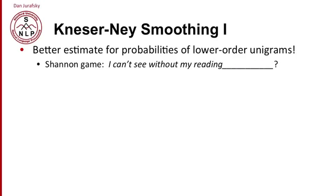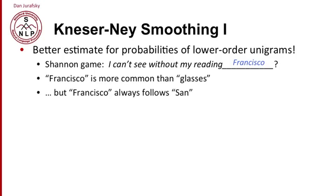Well, how about instead, the word Francisco? Well, that seems very unlikely in this situation. And yet, Francisco, as just a unigram, is more common than glasses. But the reason why Francisco seems like a bad thing after reading, one intuition we might be able to get is that Francisco always follows San, or very often follows San. So, while Francisco is very frequent, it's frequent in the context of the word San.